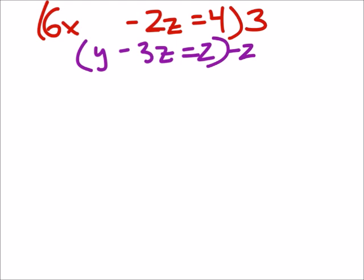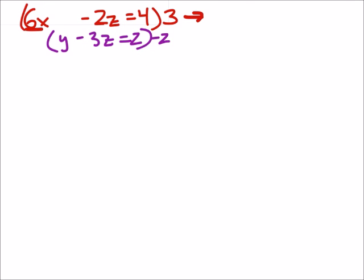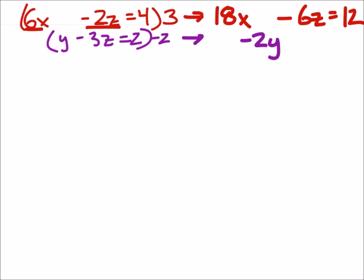So let's see how that works. I got the 6X times 3, which is 18X, minus, well, it's a negative 2Z times 3, still a negative 6Z, and this equals 4 times 3, which is 12. Alright, next up, we're going to multiply that bottom equation by that negative 2. So I've got a negative 2Y plus 6Z. That's what we wanted. We wanted those coefficients to be opposites. And then 2 times negative 2 is negative 4.